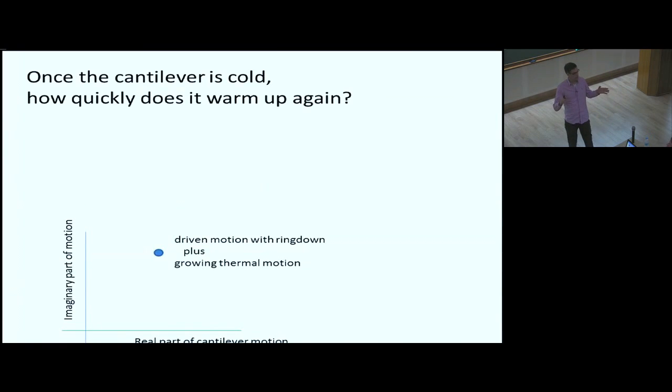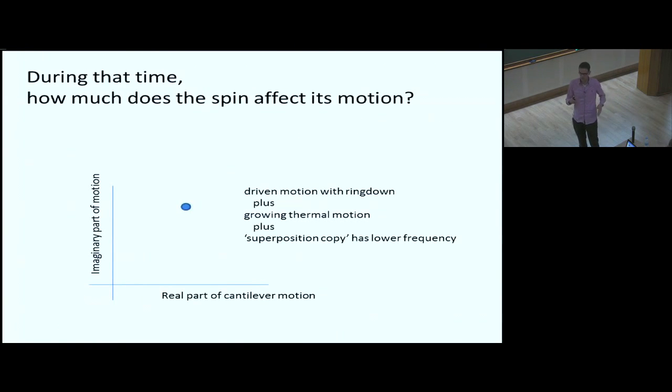Then you can ask yourself, now we have the squid on, we can measure its motion, we can remove the motion. Then we switch off the squid because we don't want to do a measurement anymore. And then we stop driving it and we just see what happens. And gradually the amplitude will decrease and the thermal motion will increase again. So we can calculate with the setup that we have now how much time we have. So we see that when we do it in this way we have 100 milliseconds and during that time there will be a little bit of extra thermal motion. Just a few picometers again.